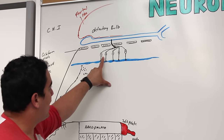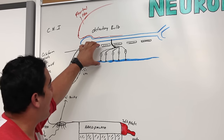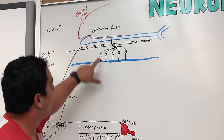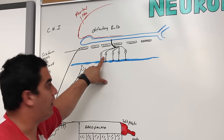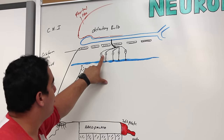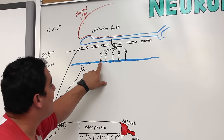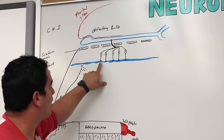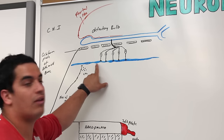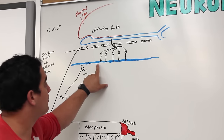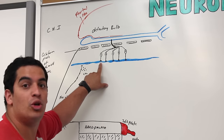The olfactory neurons are located within the upper roof of the nasal cavity. They're going to be surrounded by some epithelial cells. These little dendritic extensions — the terminal parts that are picking up different types of odorants — are exposed within this actual mucus layer.